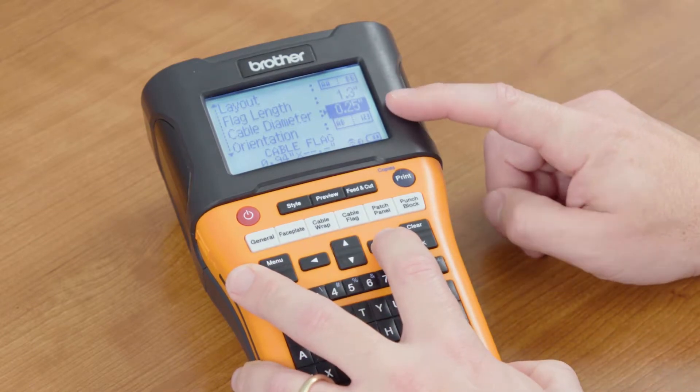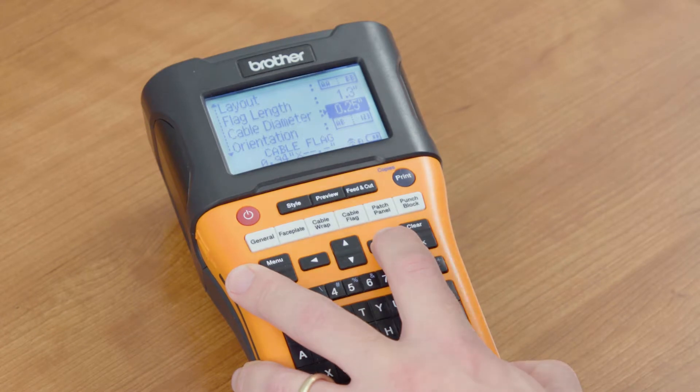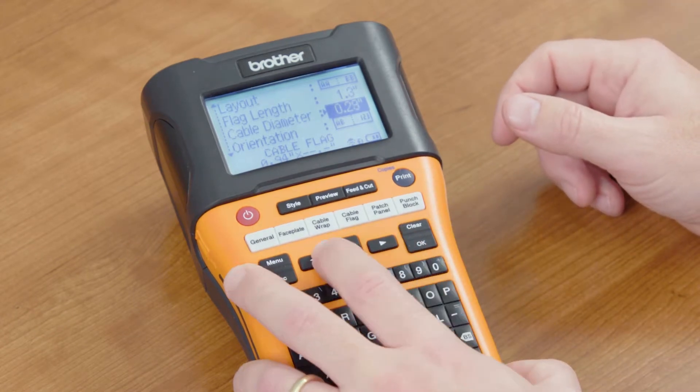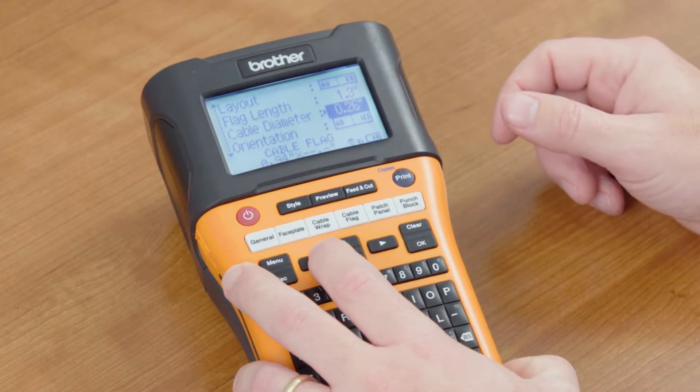Cable diameter. Here is where you tell the machine what the diameter of your cable is and simply use your left and right arrows to change that information.